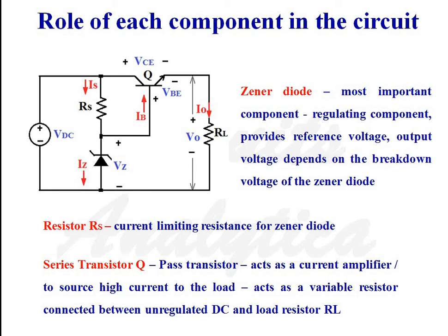The role of each component in the circuit: the zener diode is the most important component — it is the regulating element and provides the reference voltage. Output voltage depends on the breakdown voltage of the zener diode. Resistor RS is the current limiting resistance for the zener diode. Series transistor Q is the pass transistor, which acts as a current amplifier to source high current to the load. It also acts as a variable resistor connected between the unregulated DC voltage and load resistance RL.